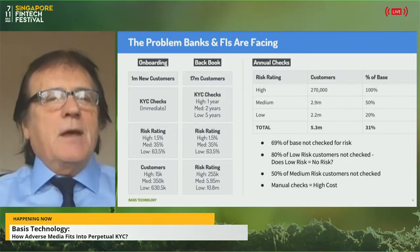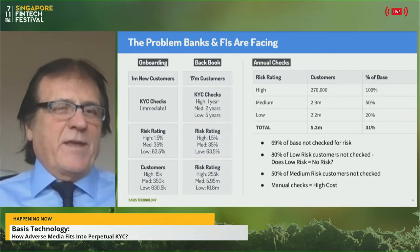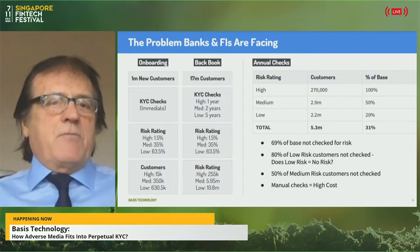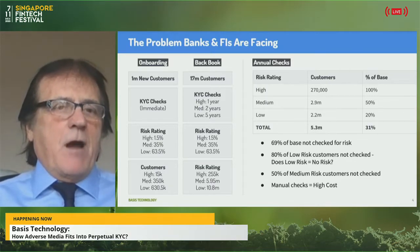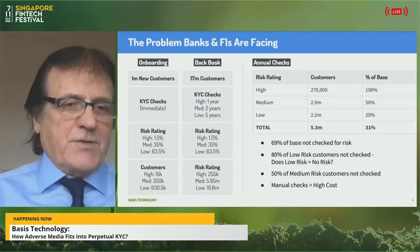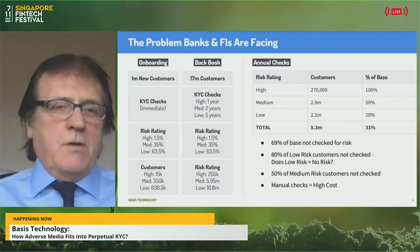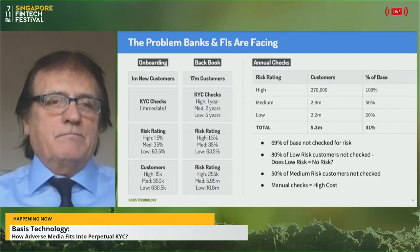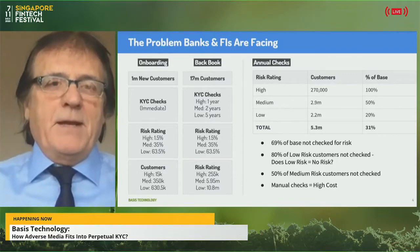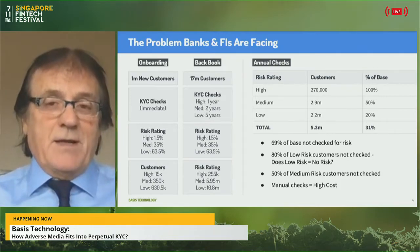Here's an example from a bank — obviously I won't name them. During onboarding they get about one million new customers a year. Their risk profile is roughly 1.5% high risk, 35% medium risk, and 63.5% low risk. Then looking at their back book of 17 million customers, applying checks at high risk once a year, medium every two years, and low risk every five years — only around 31 percent of clients are being checked at any given time.